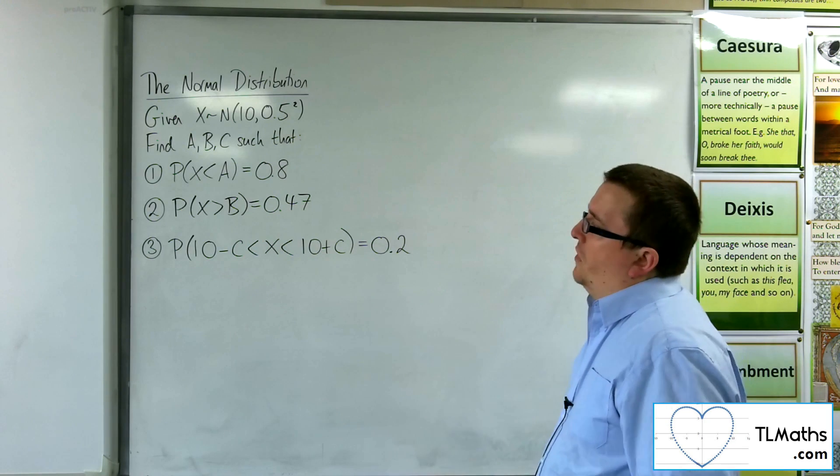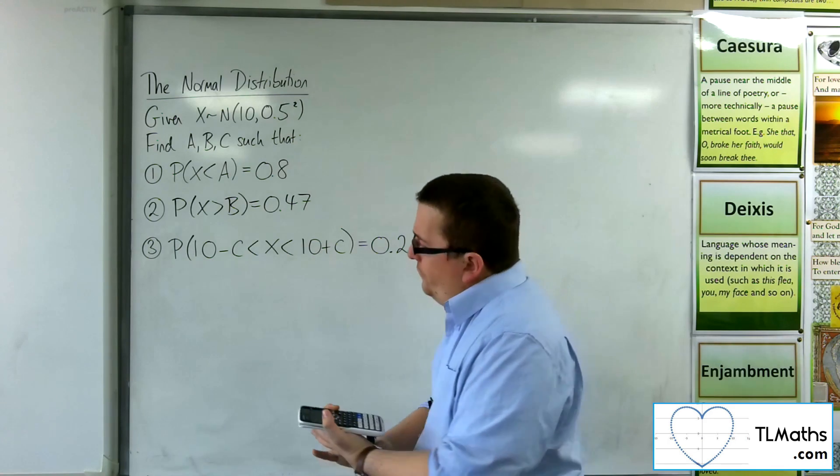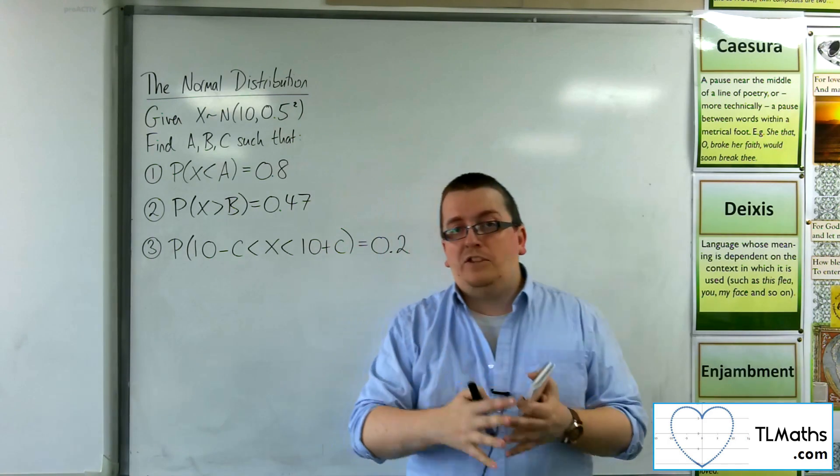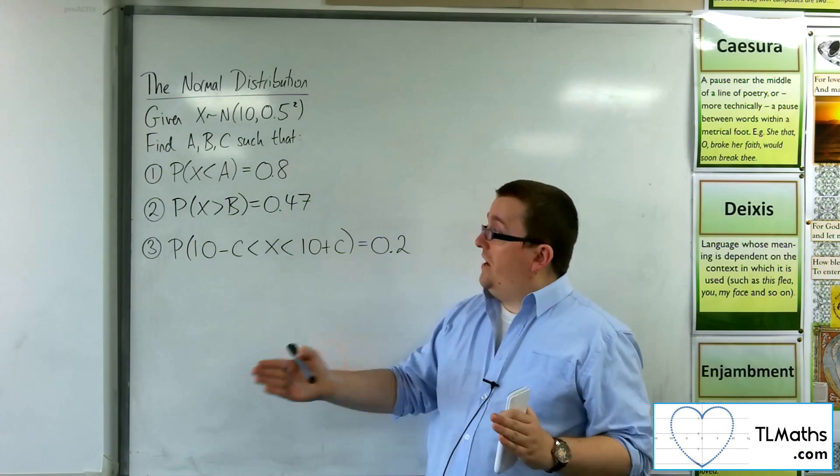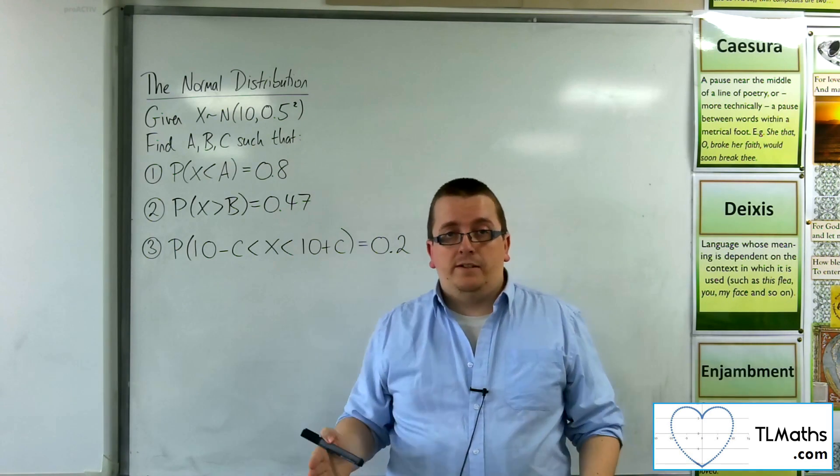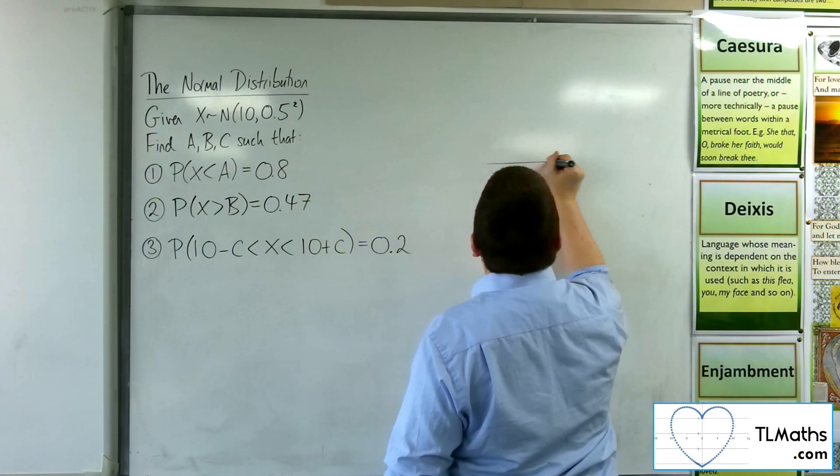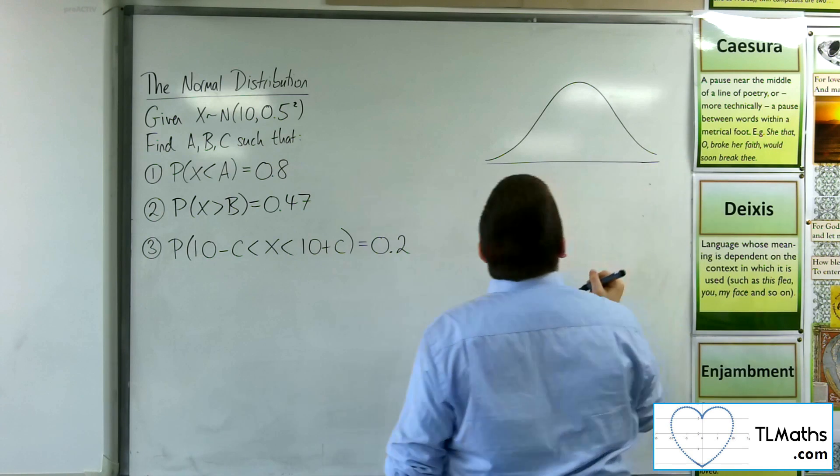In the first one we've got the probability of x being less than a is 0.8. So what that means is that the probability of x being less than some value will be 80% of the data. So really what you want to do for each of these problems is to draw a little diagram, a normal distribution so you can see precisely what's going on.